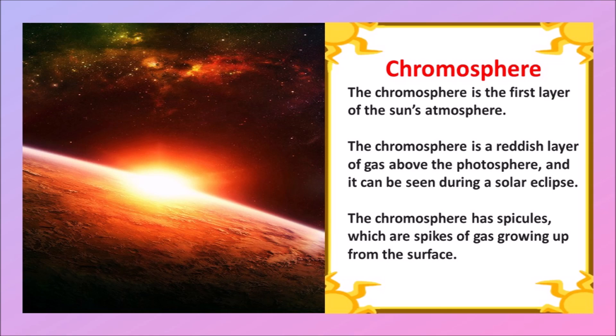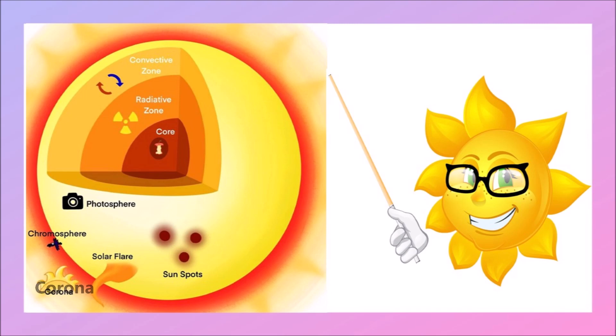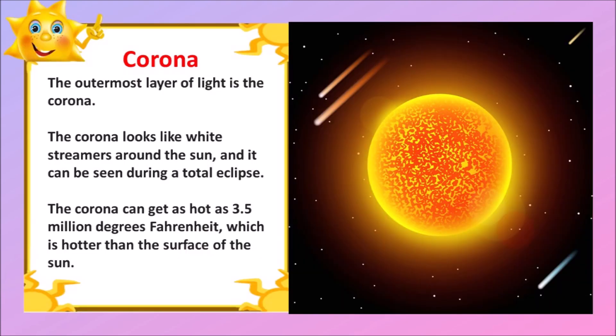The next layer is the corona. The outermost layer of the light is the corona. The corona looks like white streamers around the Sun and it can be seen during the total eclipse. The corona can get as hot as 3.5 million degrees Fahrenheit, which is hotter than the surface of the Sun.